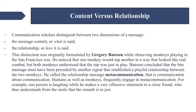Scholars studying communication distinguish between two dimensions of a message: the first is message content, or what is said; the second is the relationship dimension, or how it is said. This distinction was originally formulated by Gregory Bateson while observing monkeys playing at the San Francisco Zoo. He noticed one monkey would nip another in a way that looked like real combat, but both understood it was play. Bateson concluded the bite message was preceded by a signal establishing a playful relationship. He called this metacommunication — communication about communication. Humans frequently engage in metacommunication; for example, a person laughing while making an offensive statement to a close friend, who understands from the smile that the remark is in jest.